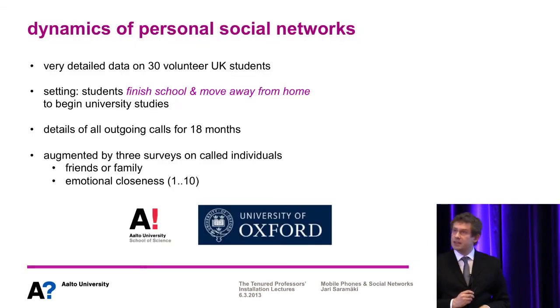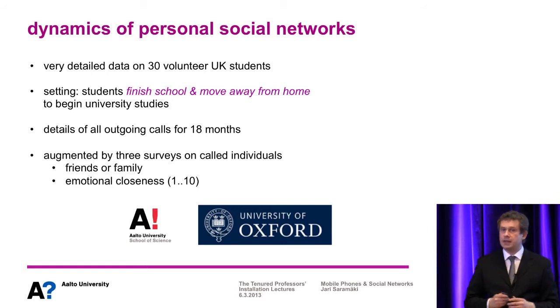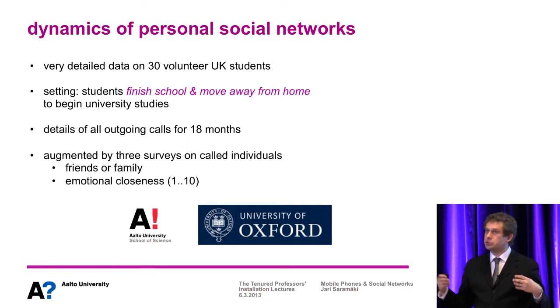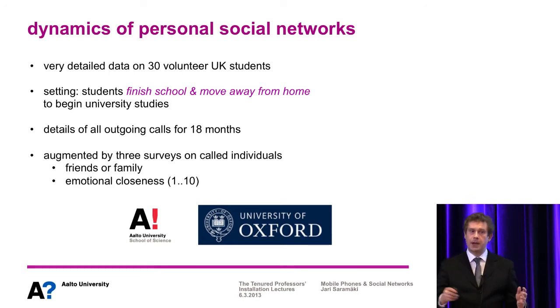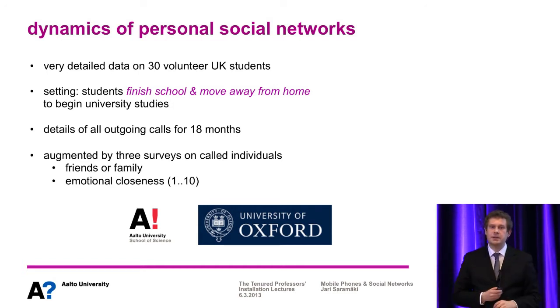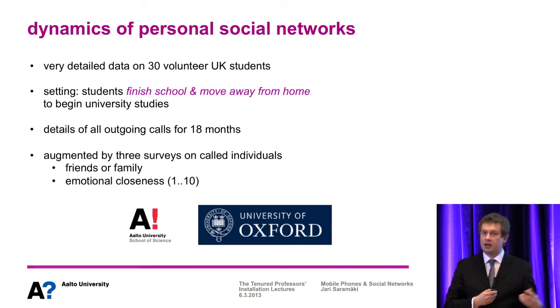In this first study, the setting was totally static — we assumed the network doesn't change in time, whereas we know our social circumstances do change. New friends come, old friends go. So how do these changes relate to strong and weak ties, and can one find regularities and patterns in such changes? We recently studied this together with scientists from Oxford. We had really detailed data on 30 students in a beautiful setting — they were just finishing school and moving away from home to attend university elsewhere, so their social networks were bound to change. For these students we had the details of all their outgoing mobile telephone calls, who was called and when, for 18 months — one and a half years — augmented by some survey data.